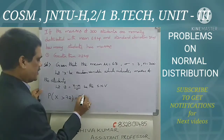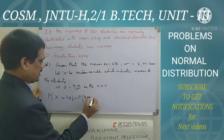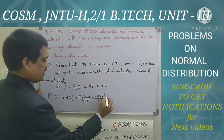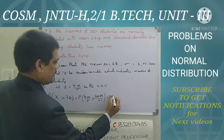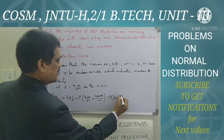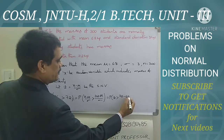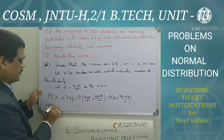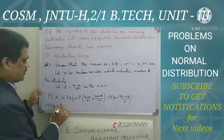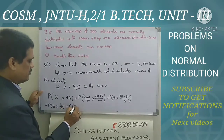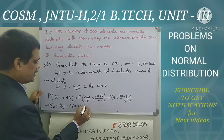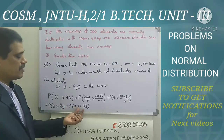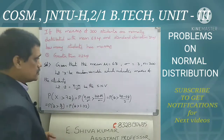Converting to standard normal variate: probability of (x minus mu) divided by sigma greater than (72 minus mu) divided by sigma equals probability of Z greater than (72 minus 68) divided by 3. That equals P of Z greater than 4 by 3. If you calculate 4 divided by 3, you get 1.33. Now you have to search for the z value of 1.33 in the table, but before that you have to draw the figure.